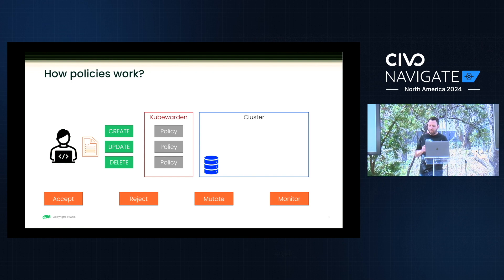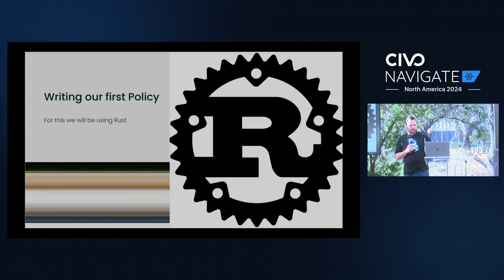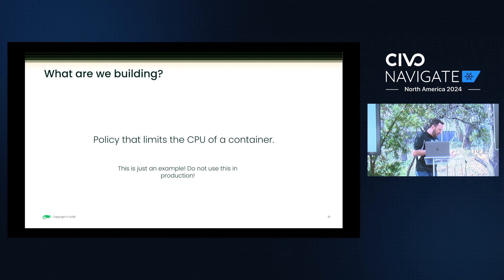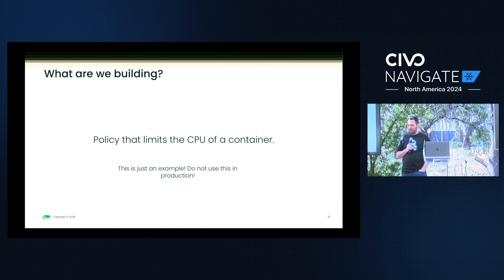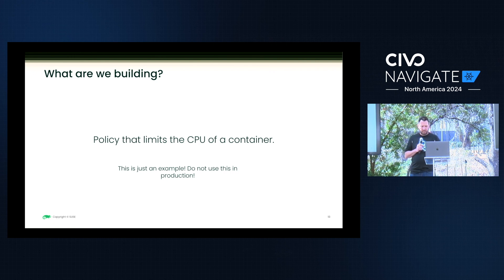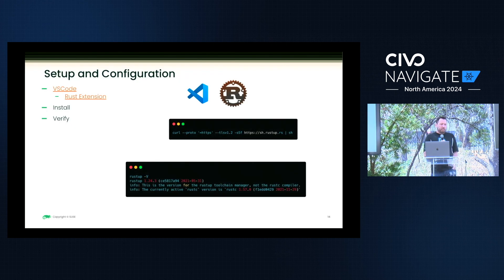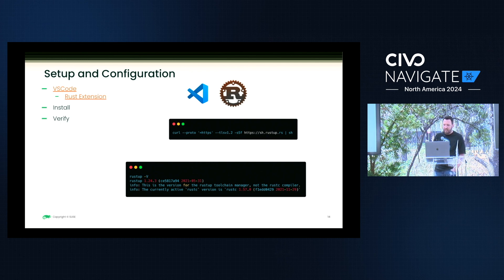For writing our first policy, we need an idea — and this normally comes with a demo but time constraints prevent that today. We want a policy that limits the CPU of a container; we don't want you to over-provision. Again, this is a demo — please do not put this in production. To do this you'll need some type of IDE, whether it's Vim, Nano, or VS Code. I recommend the VS Code Rust extension, and then you can install Rust relatively easily and verify it's there.